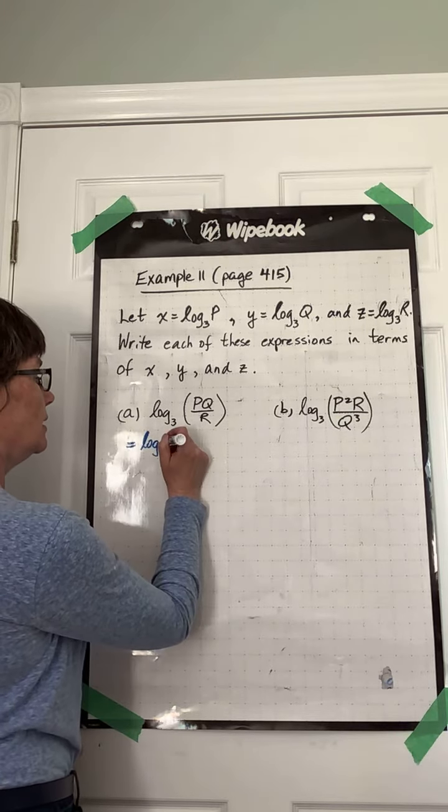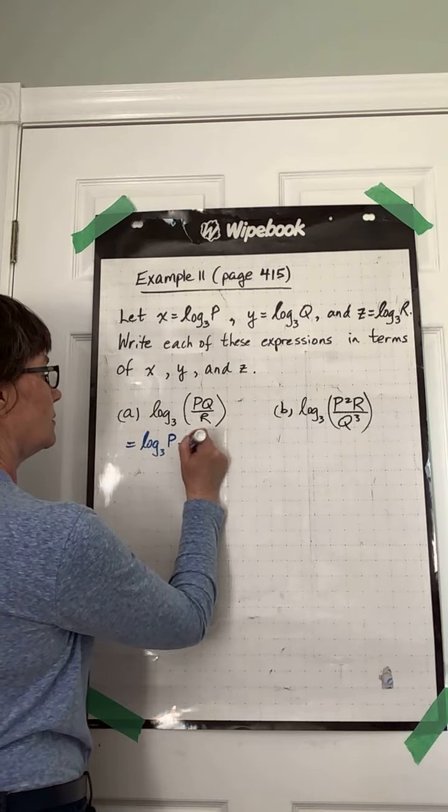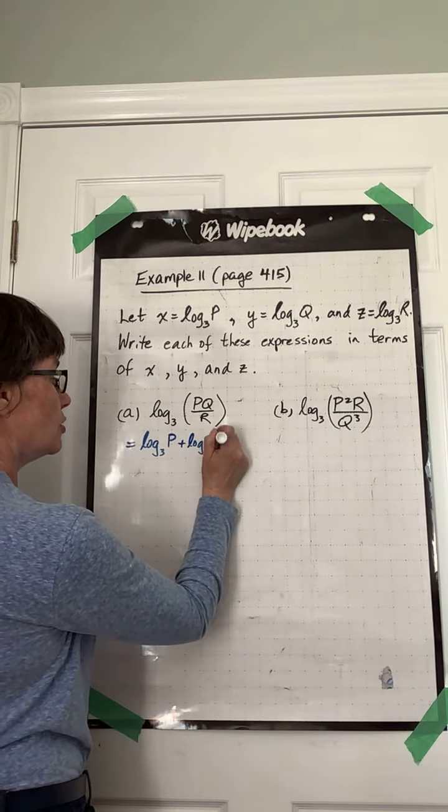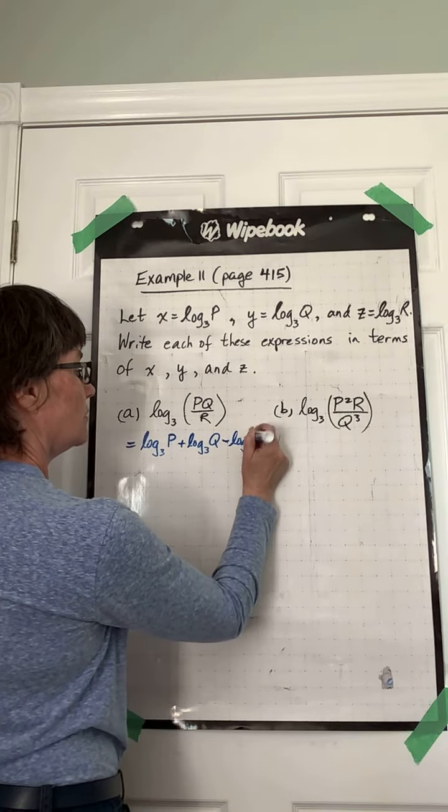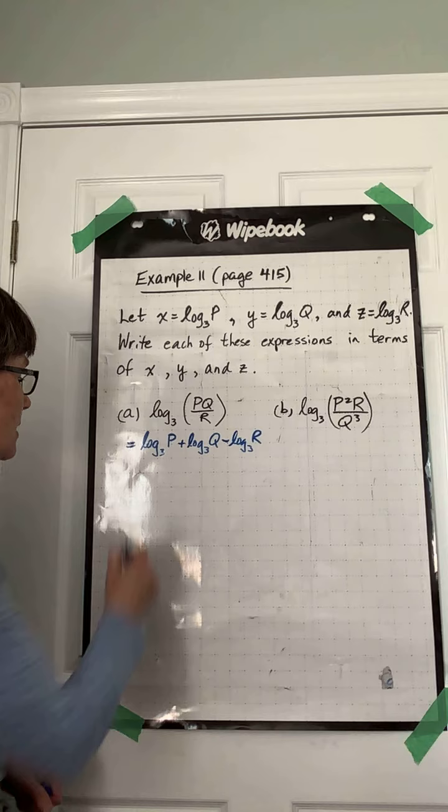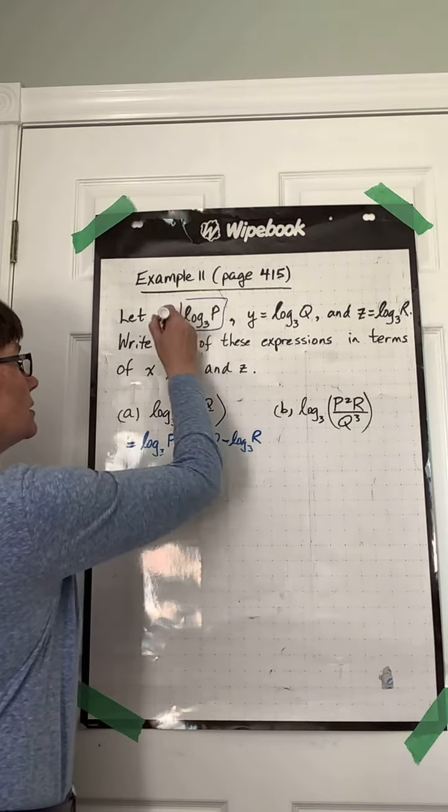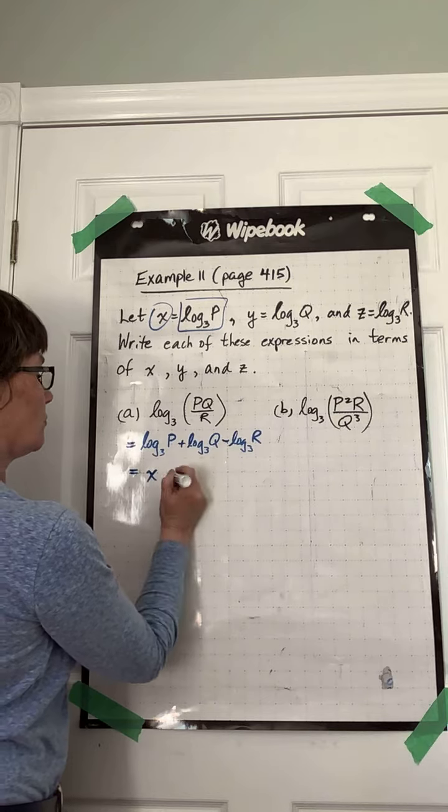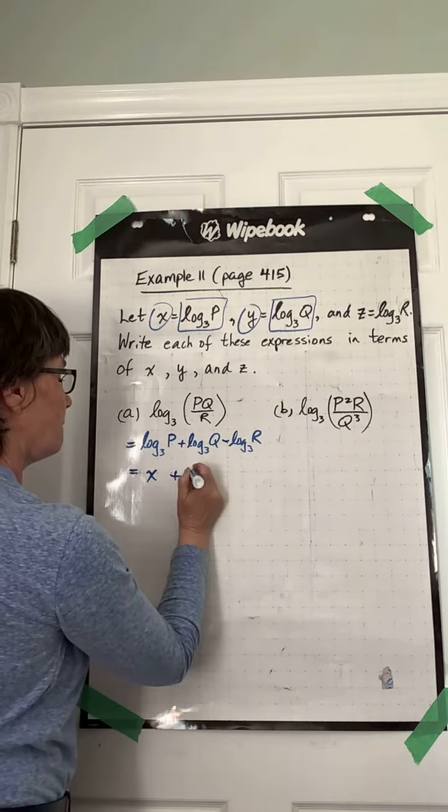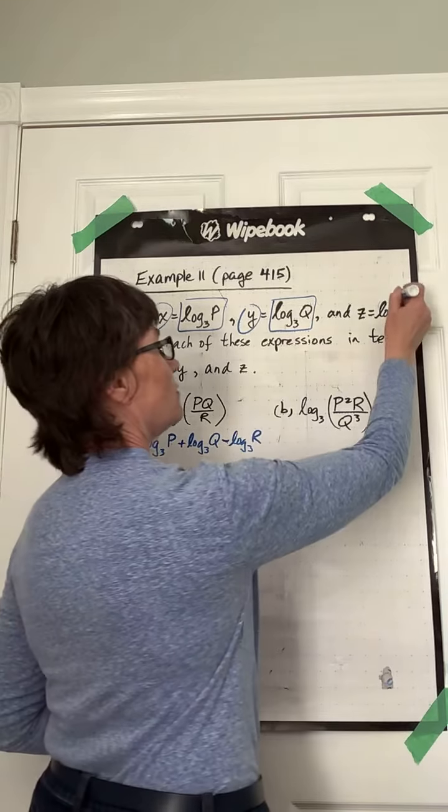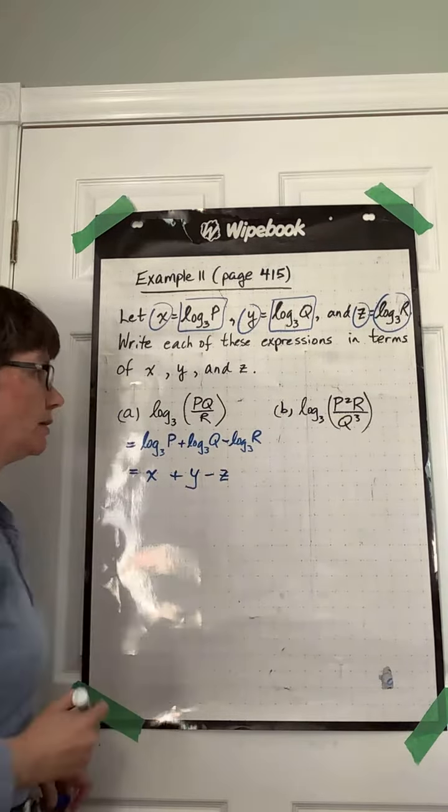And now we can just replace these. Log base 3 of p is x. Log base 3 of q is y. Log base 3 of r is z. And there's that first one.